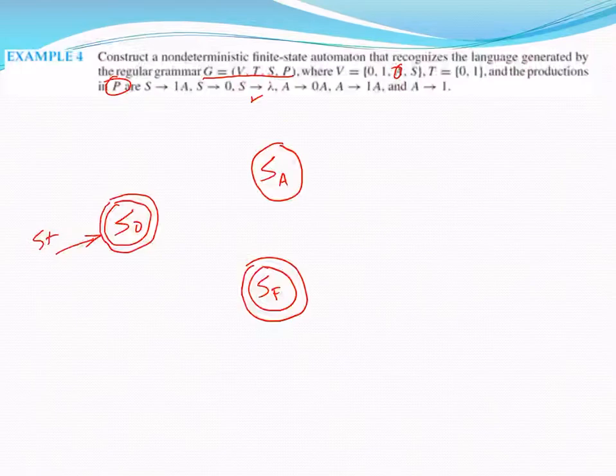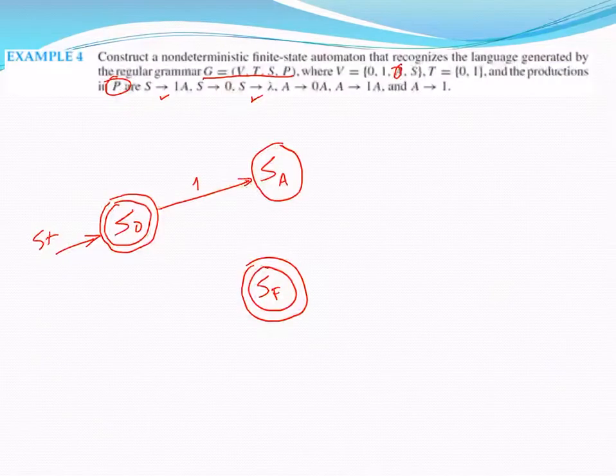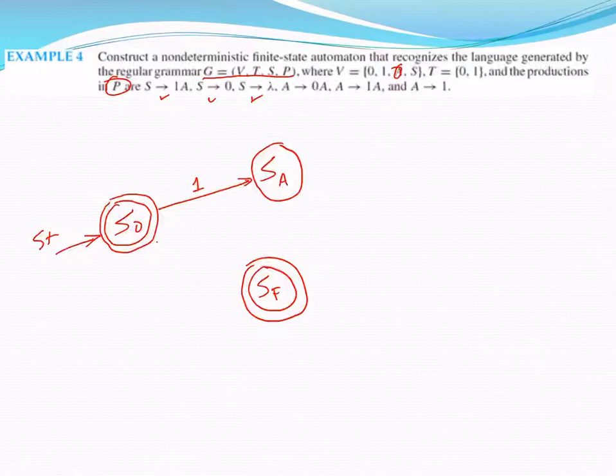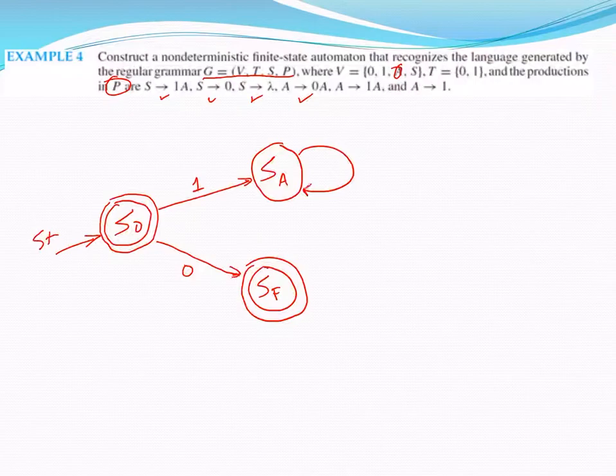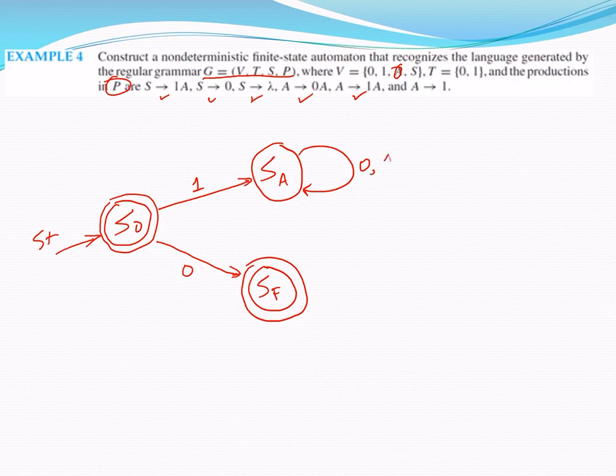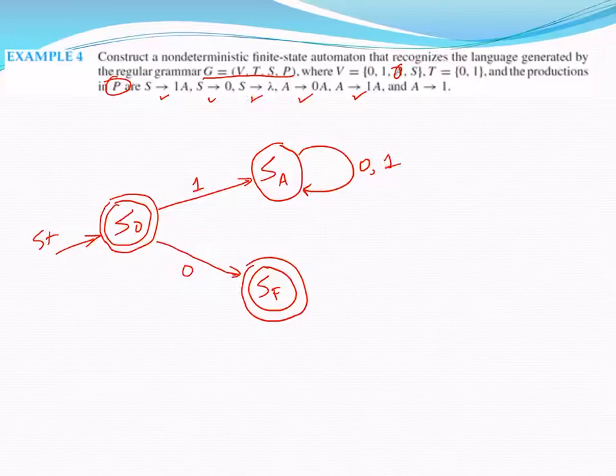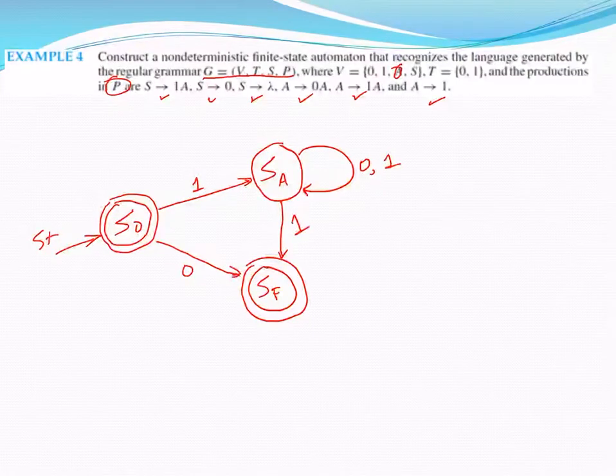S produces 1A will result in a transition from S0 to SA on input of 1. S produces 0, which is a terminal symbol, so it's going to go to the final state on input of 0. I've already accounted for S producing lambda. A produces 0A will be a transition from state A back to state A on input of 0. A produces 1A will have a similar transition, so we'll add another input to that arc.